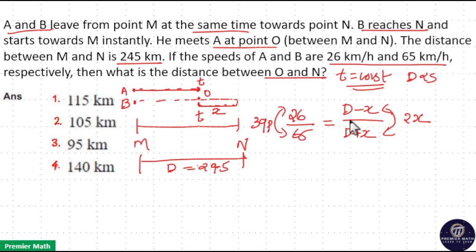Then if you add it, D plus X plus D minus X equals 2D. 2D equals 65 plus 26, which is 91. So this is 91 parts because we are adding the ratio parts together.